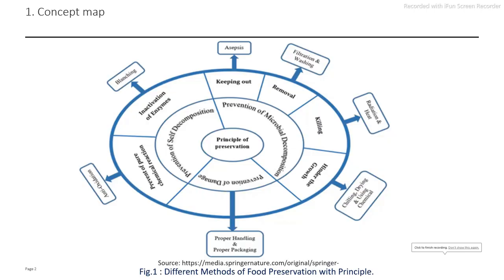First, concept mapping in the principle of food preservation. Preservation of food means whatever the shelf life of that food is increased by using different techniques by applying different principles. In food preservation principles there are three main principles. First is the preservation of food by prevention of microbial decomposition. Second is the prevention of self decomposition. And third is the prevention of damage of that food. These three principles are applied to extend the shelf life of foods.